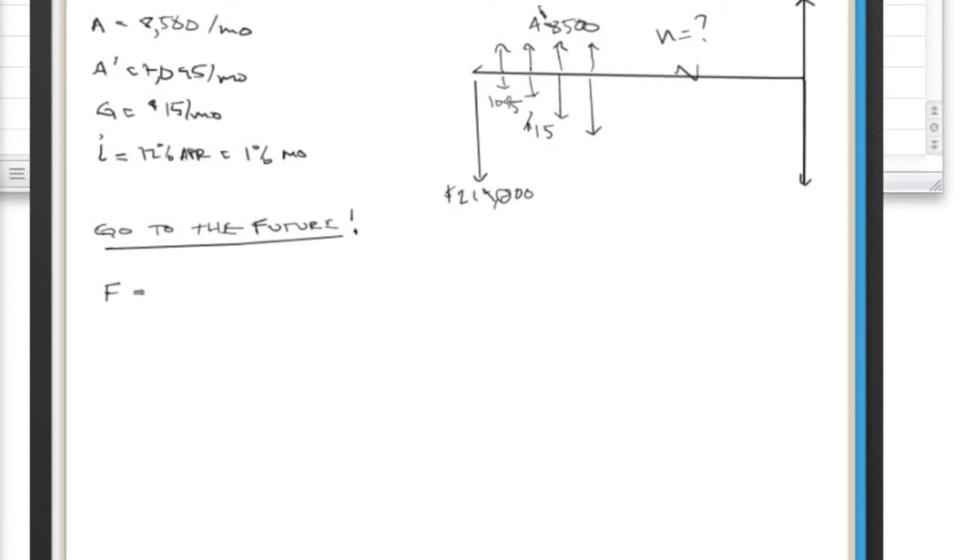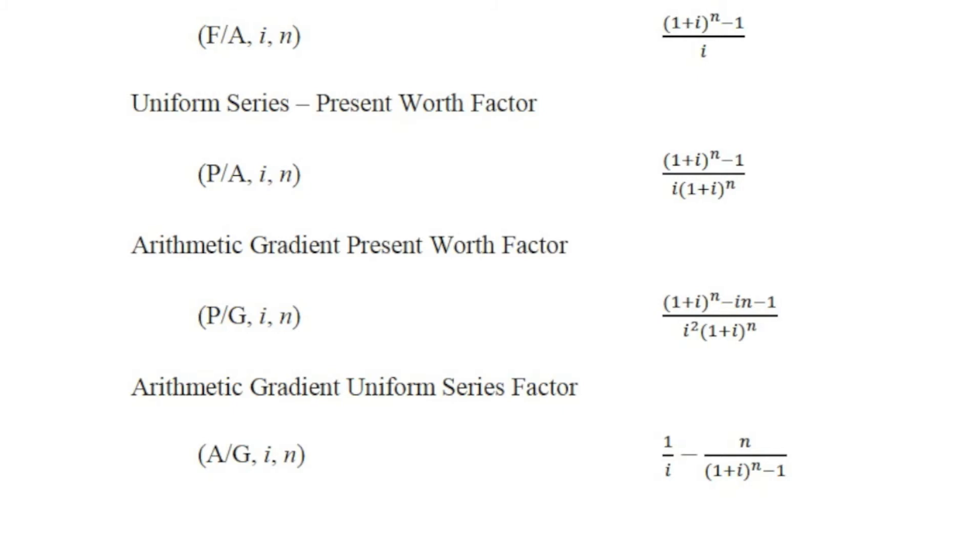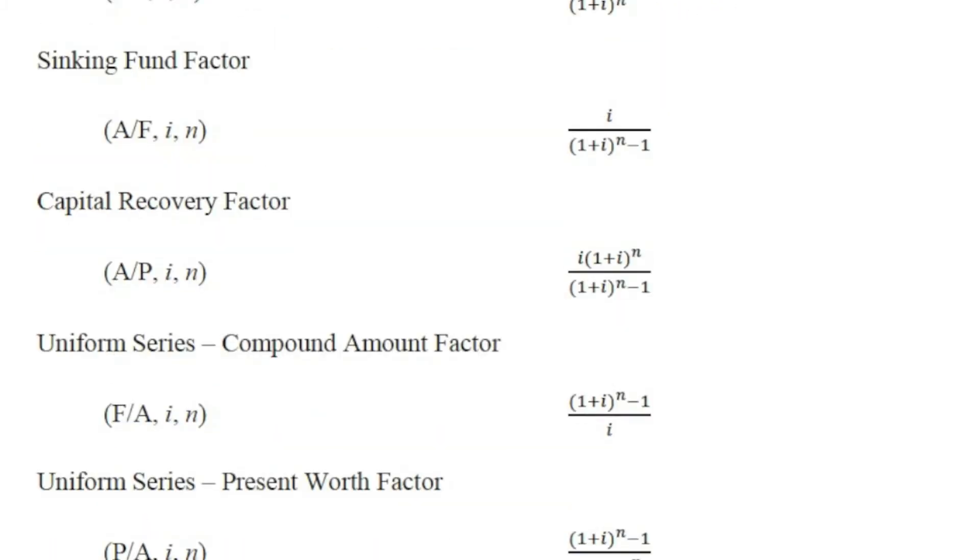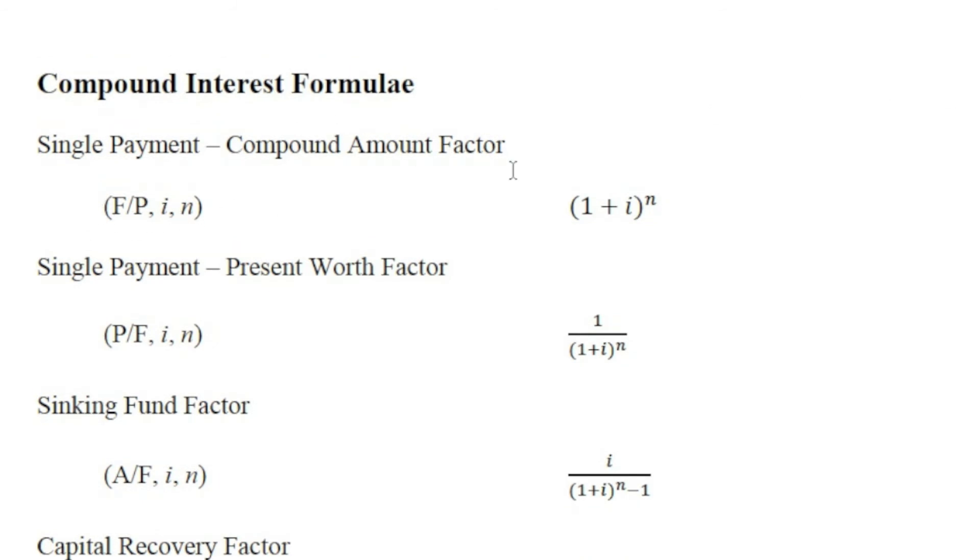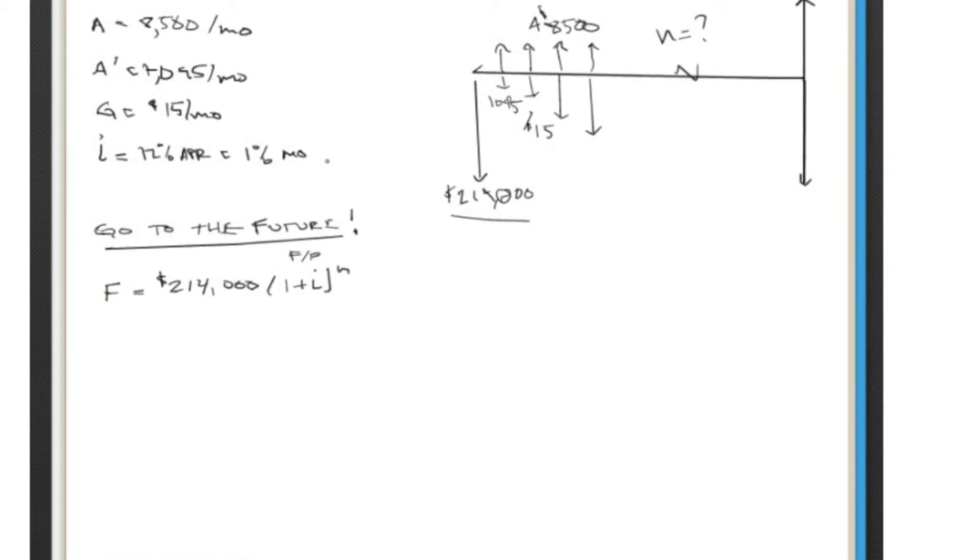So let's take F of this present value here. That's just going to be $214,000, and we're going to the future. So we're going to use this (1 + i) to the n. And that's our future given present equation. Let's see if we can keep these up here as we go so we can look at these. So future given present right there. Okay, so we do that, we get 214,000 times (1 + 0.01) for our 1% compounded monthly to the n. We don't know what n is.